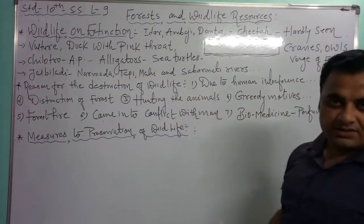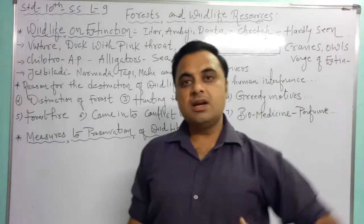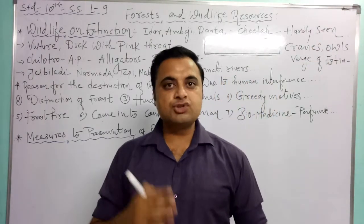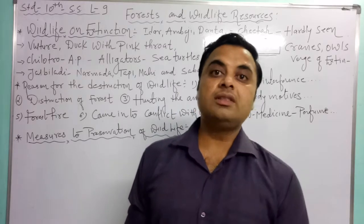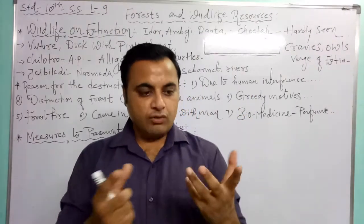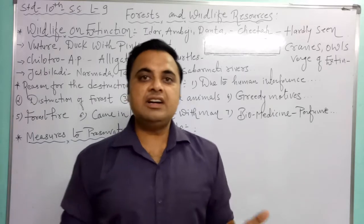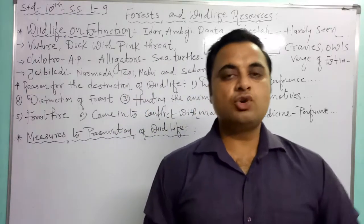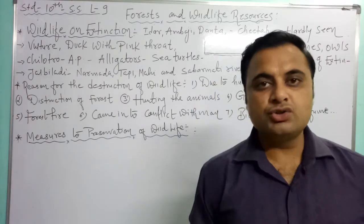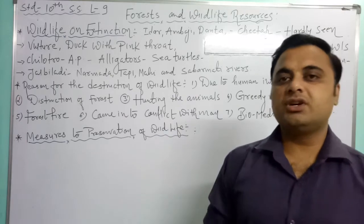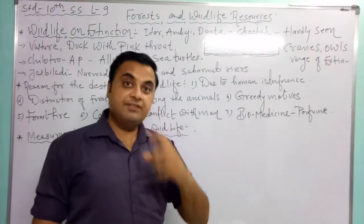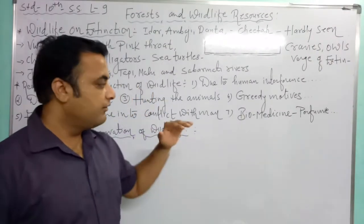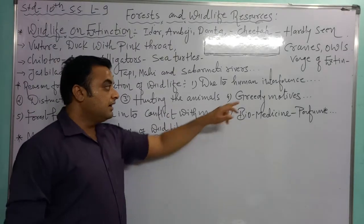The third reason is the hunting of animals. Earlier, kings and maharajas had a hobby of killing animals. After that, humans began hunting wild animals for their body parts — their hair, nails, and skin. Killing animals for different body parts is also a very big reason for the destruction of wildlife.